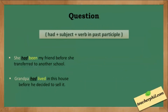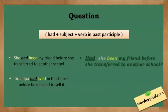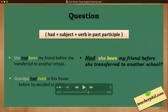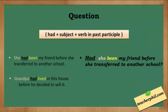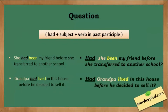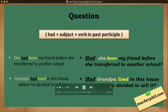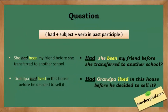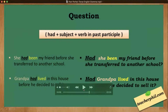For the question, the pattern is: 'had' plus subject plus verb in the past participle. So examples: 'Had she been my friend before she transferred to another school?' 'Had grandpa lived in this house before he decided to sell it?' This is the question form of the sentence.